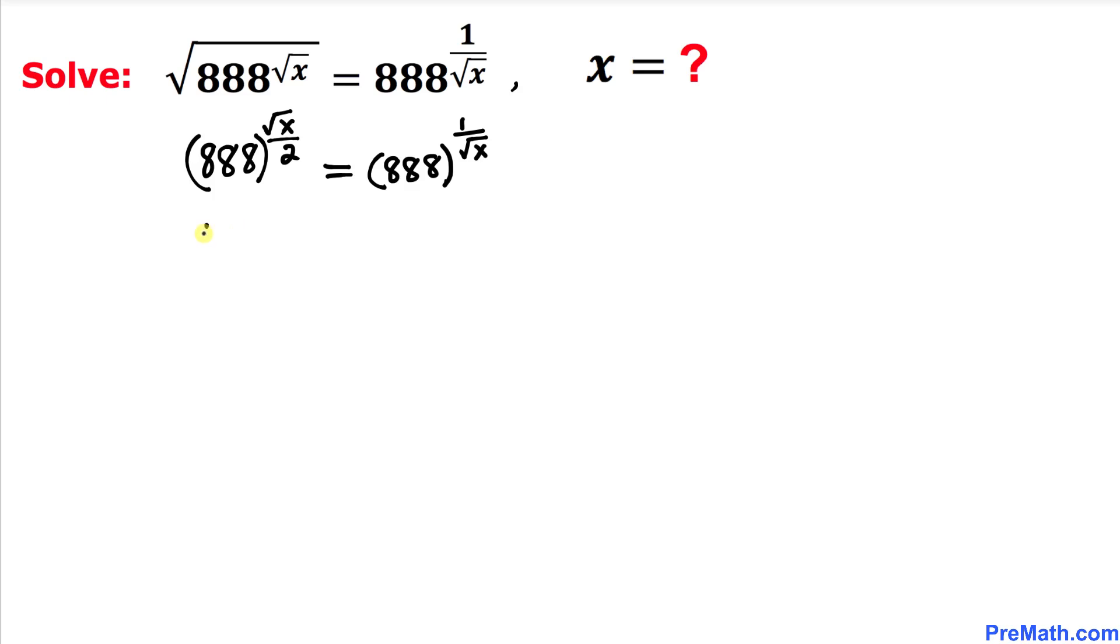Let's equate their exponents: square root of x divided by 2 equals 1 divided by square root of x.